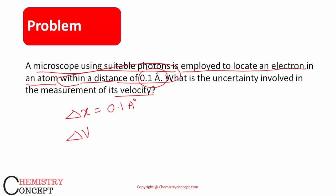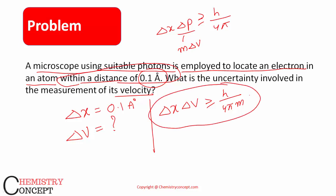Fine, what we can do, we can use the formula del x into del v would be always greater than h upon 4 pi into m, because this was actually del x into del p is greater than or equal to h upon 4 pi. Del p is momentum, which is mass into velocity, so we reach to this expression.